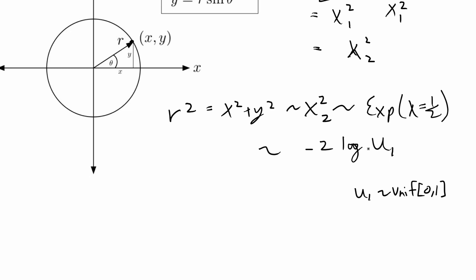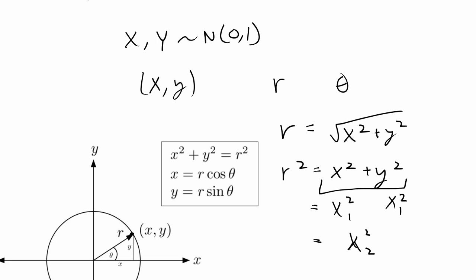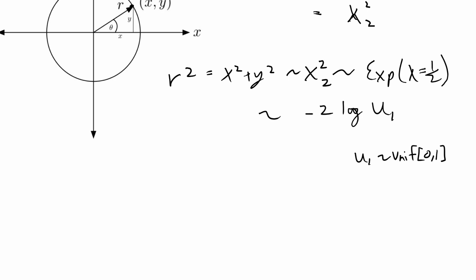This transformation from chi-squared to uniform has been proven in the literature. Essentially, we're working backwards — we want samples from two normal random variables, and Box-Muller achieves that by transforming them into uniform random variables we can sample from directly. We've done that for R. For theta, it can be distributed anywhere in the unit circle, so theta = 2π·u2, where u2 ~ Uniform(0,1).